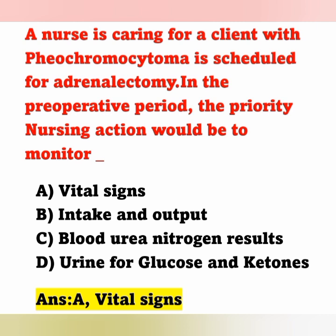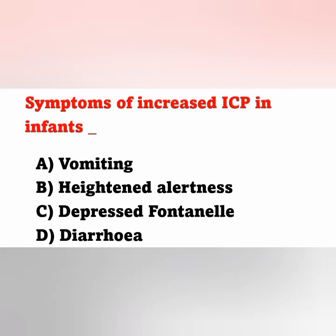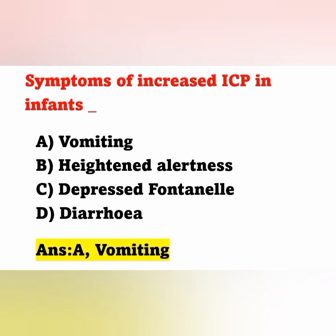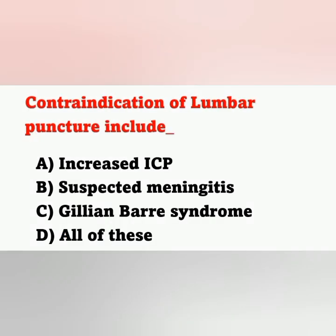Next question: symptoms of increased ICP in infants — Option A: vomiting. Option B: heightened alertness. Option C: depressed fontanelle. Option D: diarrhea. The correct answer is vomiting. Next question: contraindications of lumbar puncture include — Option A: increased ICP. Option B: suspected meningitis. Option C: Guillain-Barré syndrome. Option D: all of these.